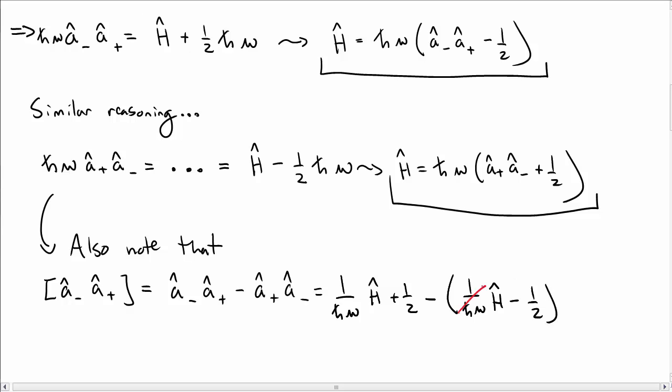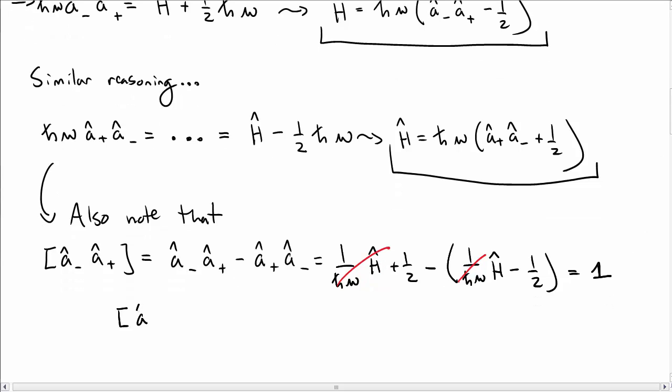Well, substituting in from above what we have for our combinations of â₊ and â₋ in terms of the Hamiltonian, I find that the Hamiltonians cancel and I actually just get a factor of one. So the commutator between â₋ and â₊ is just one. In particular, the raising and lowering operators don't commute. I guess that's not terribly surprising that they don't commute.